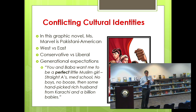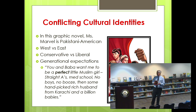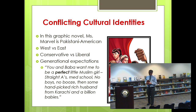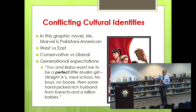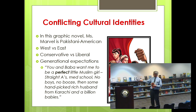I put a quote from the graphic novel here from the main character, Kamala. It says: 'You and Baba — Baba being father — you and Baba want me to be a perfect little Muslim girl. Straight A's, med school, no boys, no booze, then some handpicked rich husband from Karachi and a billion babies, right?' This is a narrative a lot of people can associate with. In this picture from the graphic novel, you can see her mother and many people wearing the hijab, and she is not — again showing that conservative versus liberal conflict.